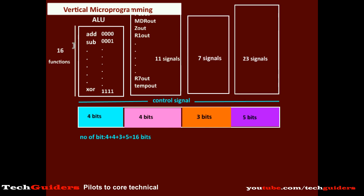But the problem is that since we are encoding the 16 signals with 4 bits, we need to decode these 4 bits back to identify the exact signal represented. Hence we need additional hardware or additional decoders in the case of vertical microprogramming. The use of decoders will make it slower than the horizontal microprogramming approach. But the micro instructions will be shorter and there will be effective utilization of bit space. The instruction will be shorter, but the number of micro instructions may increase because in each micro instruction we are specifying fewer micro operations.